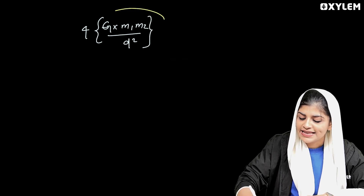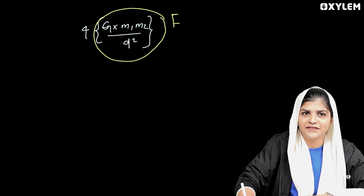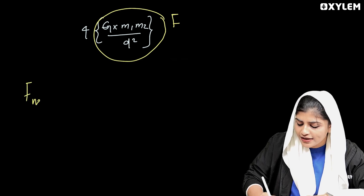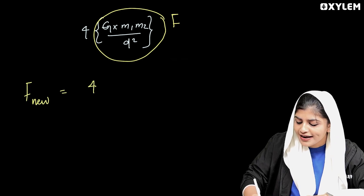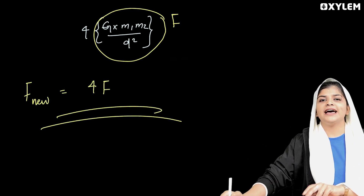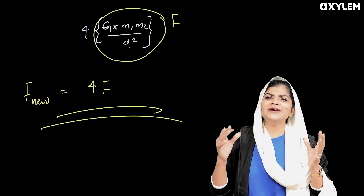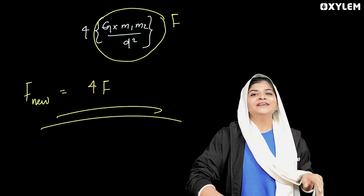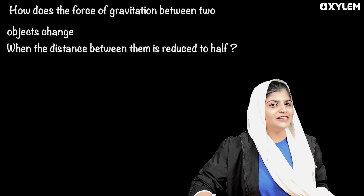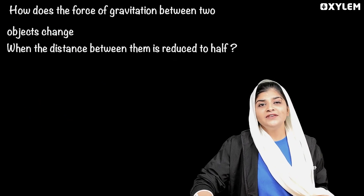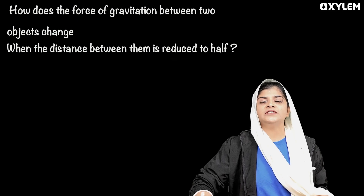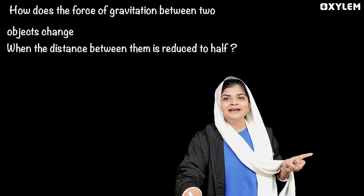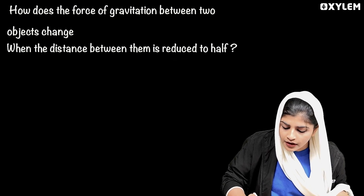This gives us 4 times G into M1·M2 divided by D squared, which is 4F. So the new gravitational force F new is 4 times the original force. That is our answer for the first question. Now for another question: how does the gravitational force between two objects change when the distance between them is reduced to half?